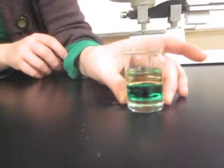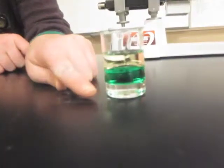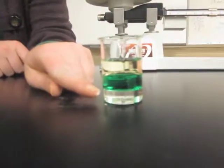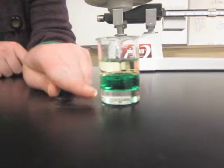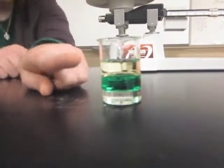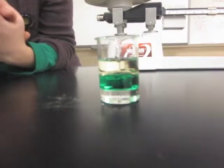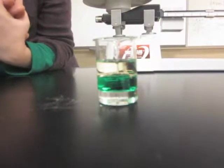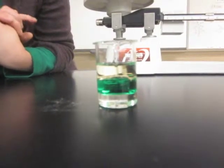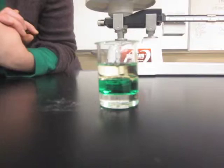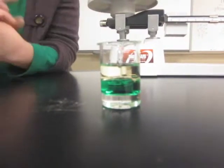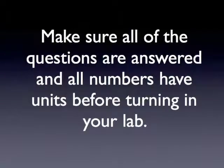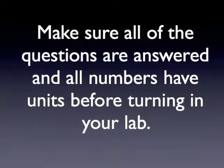If you look at the beaker, you can see all three liquids have stacked up — one on the bottom, one in the middle, and one at the top. You can see that your corn syrup is at the bottom, the colored water is in the middle, and your vegetable oil is on top. Why do you think that is? Record this on your paper and explain how density helps you figure out why these three liquids stacked up the way they did.